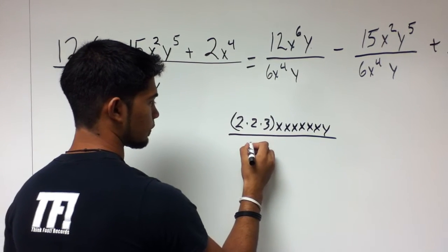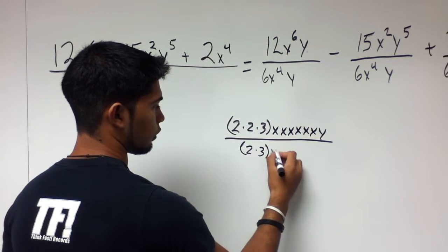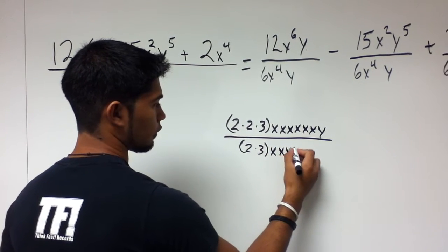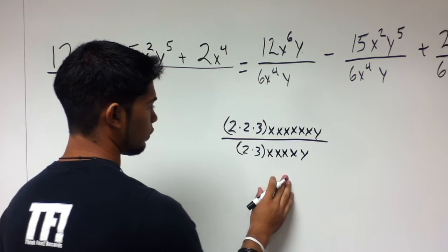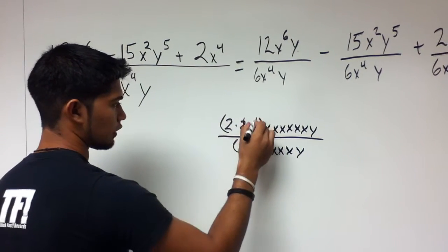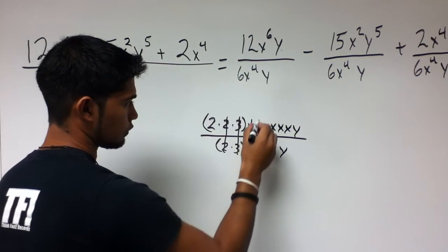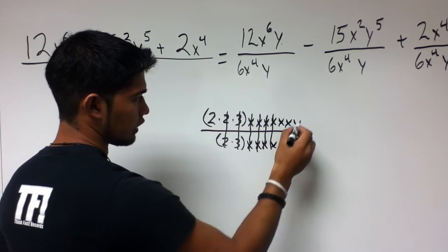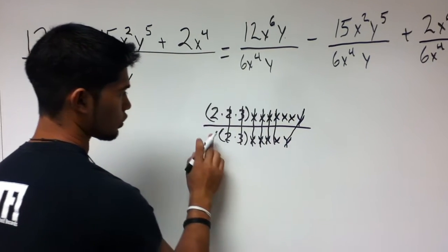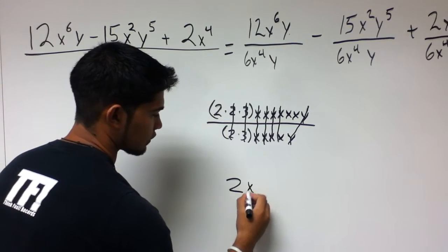6 breaks down to 2 and 3. And we have 1, 2, 3, 4 x's and 1 y. Here we can see that this 2 and this 3 are going to cancel. And for the x's, we just have 1, 2, 3, 4 x's that cancel, and then finally this y. So what we're left with is 2x squared.